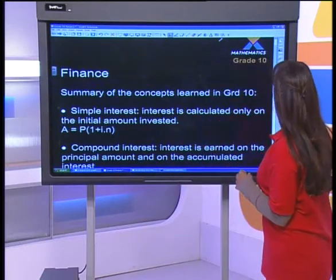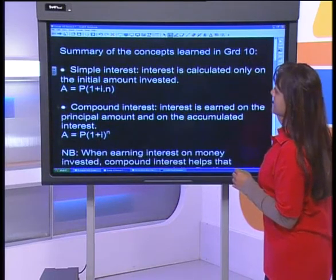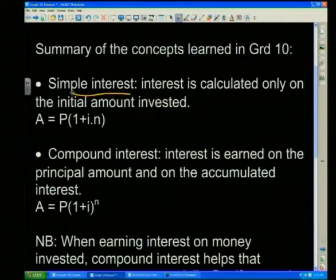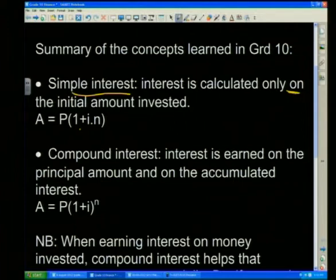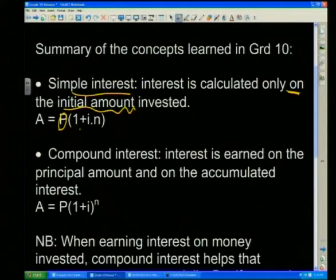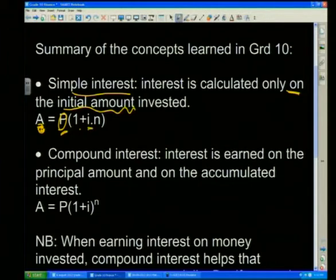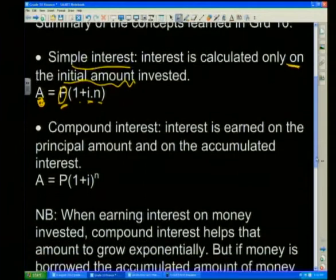Just a reminder of some important concepts from Grade 10 so far. Last week we looked at simple interest, and the formula is: A = P(1 + i·n). Simple interest is where interest is calculated only on the initial amount invested. A is the accumulated amount, P is the principal amount, i is the interest rate, and n is the number of years.